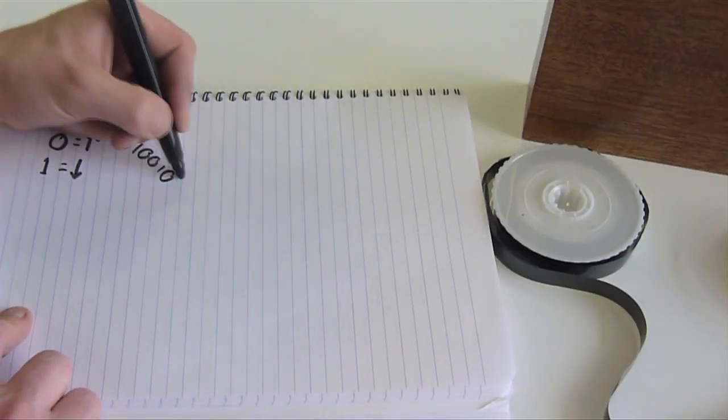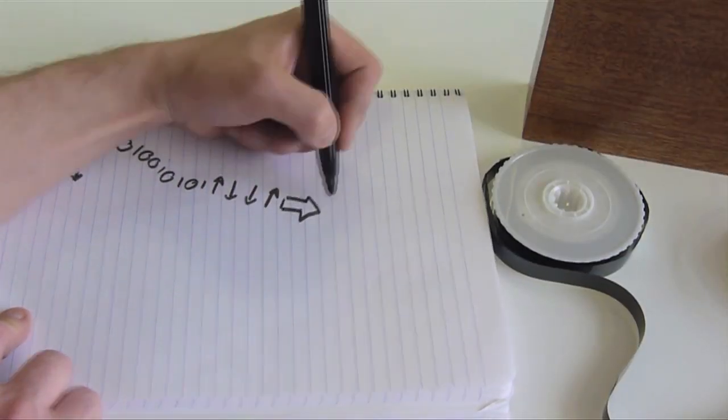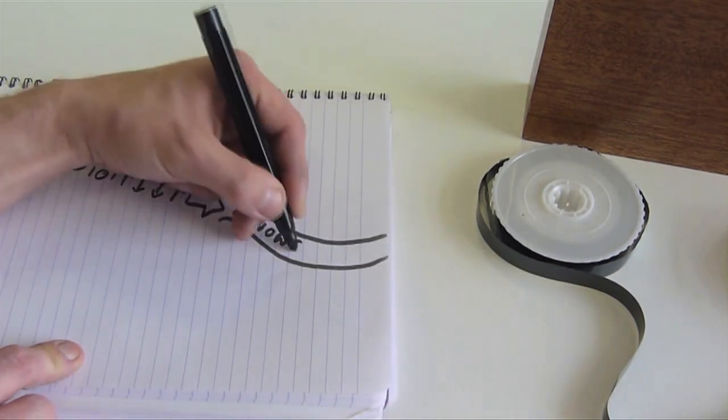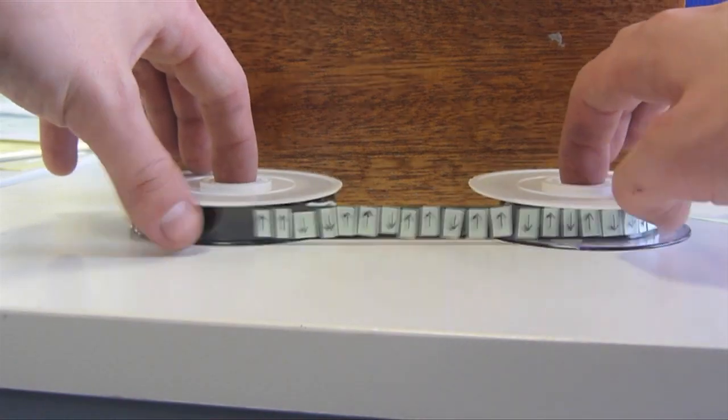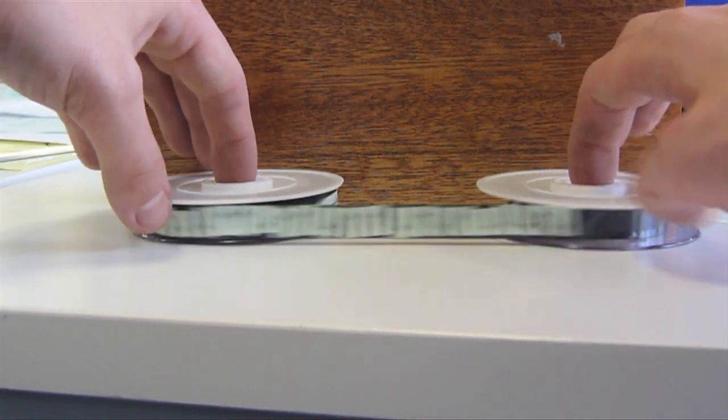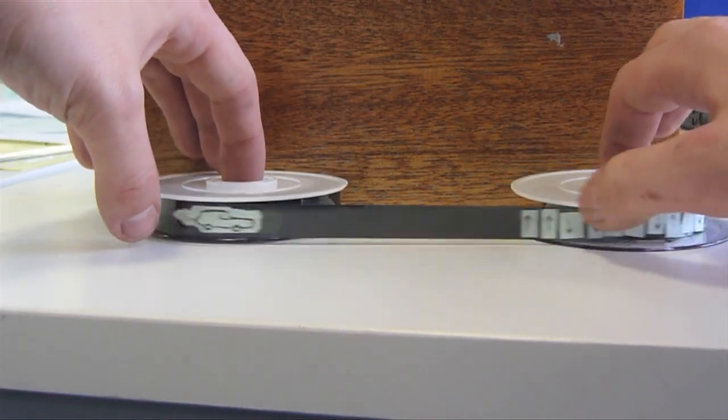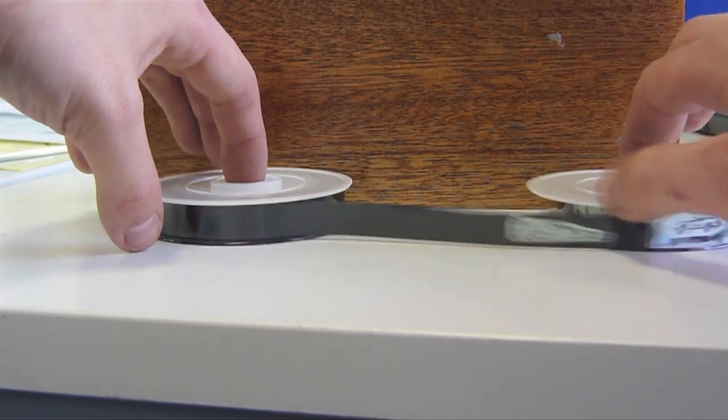In racetrack memory, data is represented on a wire as magnetic domains polarized in different directions. These domains, the data, are moved backwards and forwards past a read head, like an old-fashioned tape memory or cars on a racetrack.